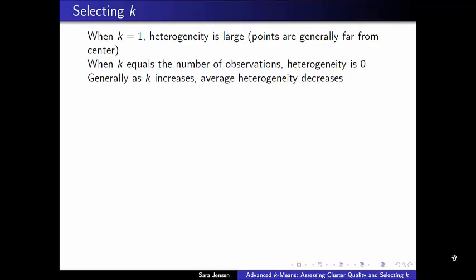No matter what variant of k-means you're running — be it regular k-means with random initialization of cluster centers, or k-means++ with smarter initialization — we need to know what k is before we begin. Up until this point, we've been using data where we knew k ahead of time. But with real data, we often won't know the k value ahead of time. So how do we go about finding it?